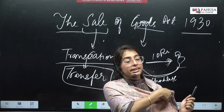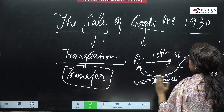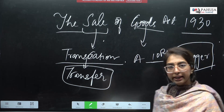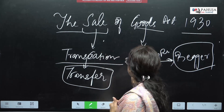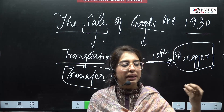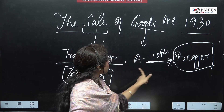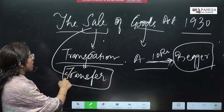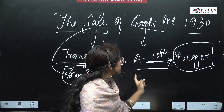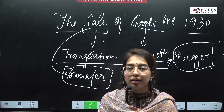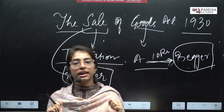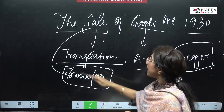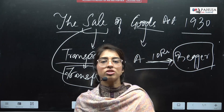Let us take another example. Remove the chocolate. Let's assume B is a beggar. You gave rupees 10 to the beggar — that is also a transfer. Now I'm saying that sale is a transfer, so your mind will ask: shouldn't this also be a sale? But is it a sale? No. So how do we determine which transfer is a sale? That's where it becomes difficult — because when I say sale is a transfer, how will I determine which transfer is a sale?